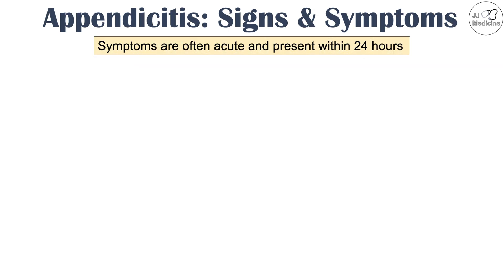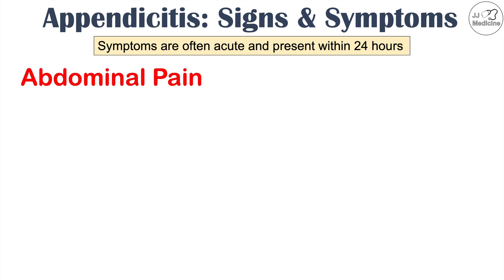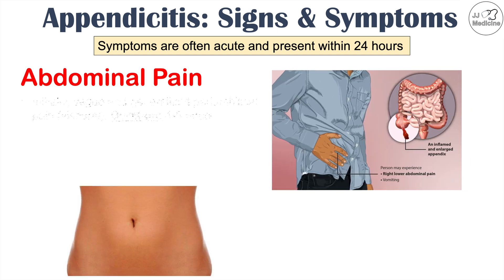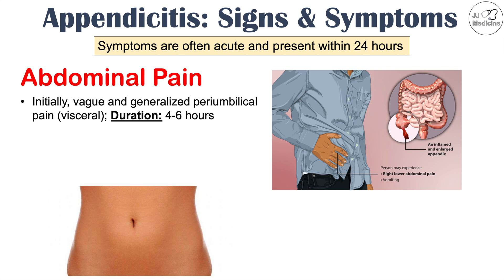Now let's talk about signs and symptoms. Symptoms are often acute and present within 24 hours. First is abdominal pain. Very important to note is that the abdominal pain in appendicitis is initially vague and generalized periumbilical pain — right around the belly button area. The patient can't pinpoint where the pain is; they just know it's in that general area. This is what we call visceral pain — vague and not able to be localized specifically. This vague generalized periumbilical pain lasts for four to six hours on average.